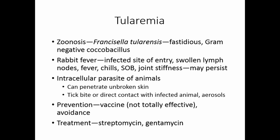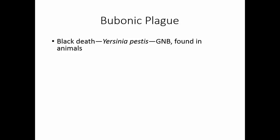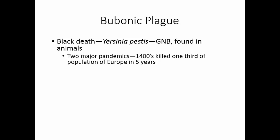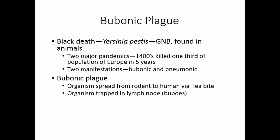Bubonic plague, called the Black Death, is caused by Yersinia pestis, a gram-negative bacillus found in a number of animals. There were two major pandemics; the one in the 1400s killed one-third of the population of Europe in five years. The disease has two manifestations: bubonic plague and pneumonic plague. In bubonic plague, the organism spreads from the rodent host to the human via a flea bite, becomes trapped in the lymph nodes, which swell to form buboes. Disseminated intravascular coagulation can occur, but what most likely occurs is necrosis of the tissues — as the tissues die, the skin turns black, which is why it was called the Black Death.